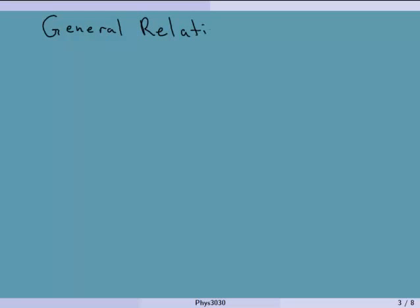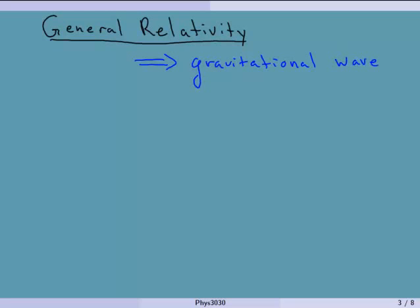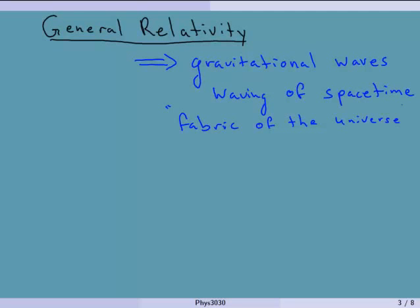Last lecture we talked about general relativity and some of its consequences, such as black holes, the precession of the perihelion of Mercury, and gravitational waves. This was a surprise consequence of the theory of general relativity — gravity really means the waving of space-time. The actual fabric of the universe is what is waving — that's the thing that's oscillating back and forth.